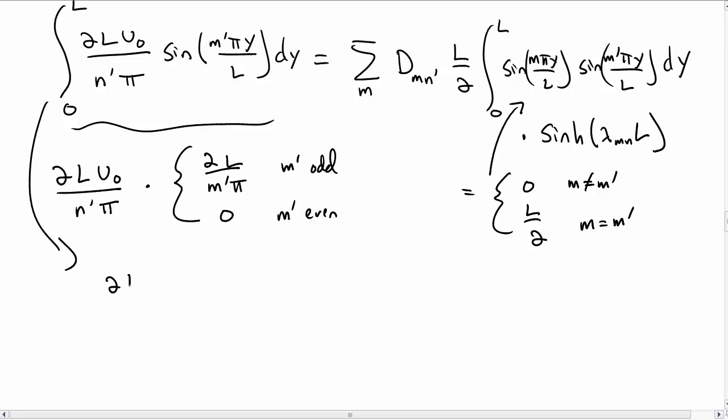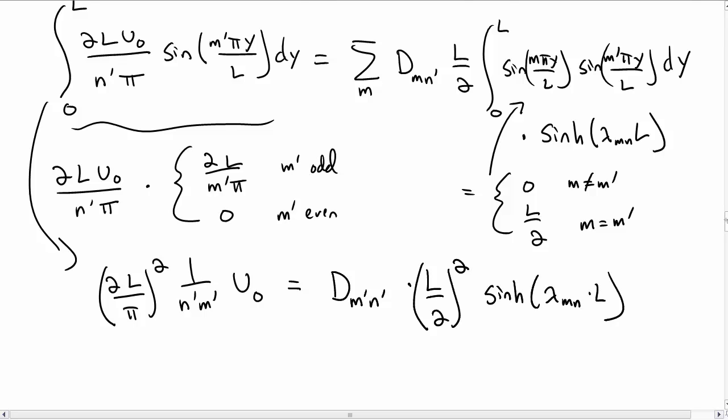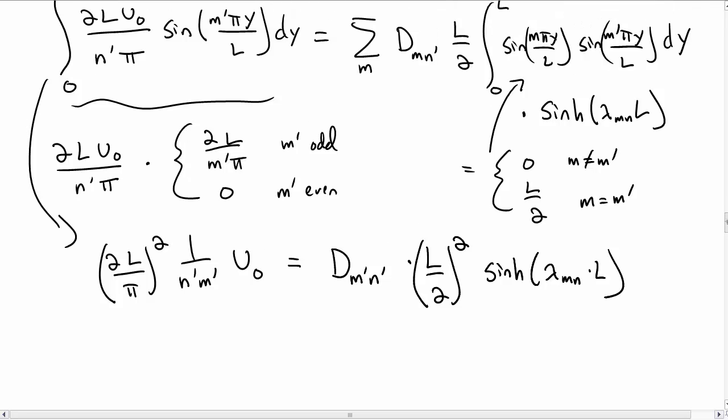This whole line now simplifies to, well we can factor out 2L/π² times n'm'·u_0, and on the right hand side our m sum has collapsed down to just one term, the m' term. There's two factors of L/2 and we're still left over with a sinh(λ_mn·L). Note that everything here now is a constant, it's just a number, and so we can actually solve this now for d_mn.